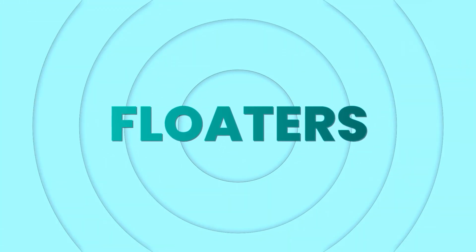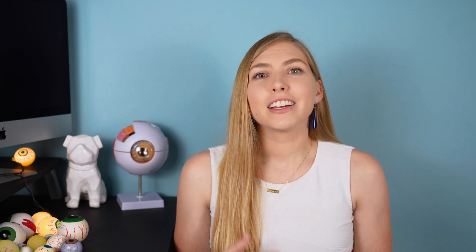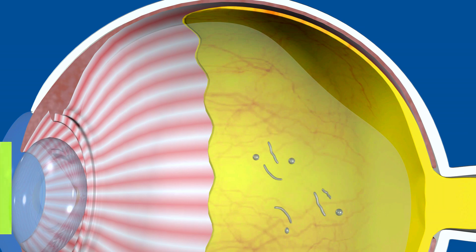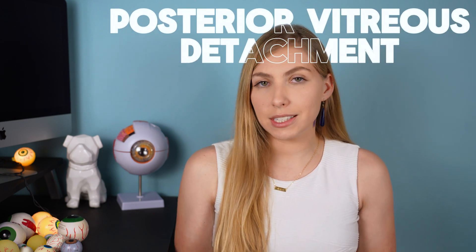Floaters are a nuisance that most people have probably experienced, especially if you've been around for a few decades. The collagen in the gel that fills the eye clumps together and casts shadows on the retina. They're usually more noticeable against a bright or plain backdrop like the sky, a computer screen, or a plain white wall. They're usually no big deal, but sometimes they can indicate a problem like a retinal tear or detachment. A new big floater may be a posterior vitreous detachment, which is something that happens normally as a process of aging, usually above age 55, with the percent chance of it happening being fairly equal to your age.